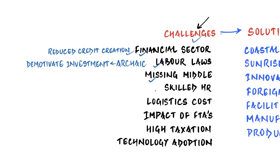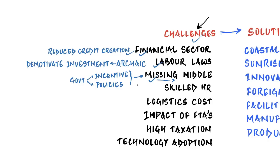The missing middle problem has been attributed to government incentive structures and policies. Most government schemes can only be availed until a ceiling of investment or size is reached — for example, the MSME categorization is based on investment. Once a firm grows beyond that limit, it loses government support, which companies want to avoid. So most firms prefer to stay within the cap and never become large enterprises.